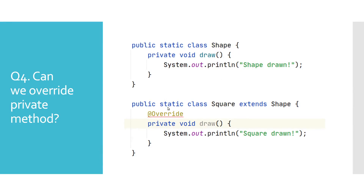So the Square class cannot reach that draw method. As mentioned earlier, having an @Override annotation can be very useful — in this example, having it gives us a compile time error. Without that annotation, Java would not report an error, but we could be misled into thinking we have overridden the private method in the Shape class. So we can conclude that it is not possible to override a private method.